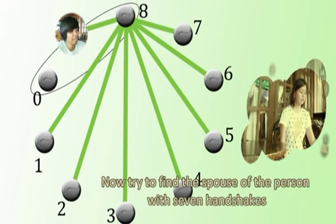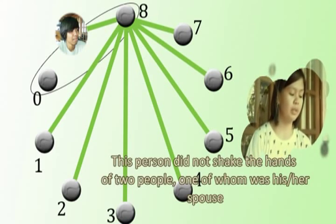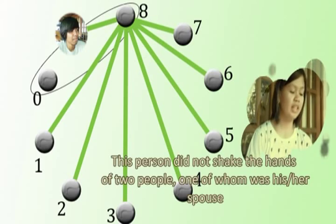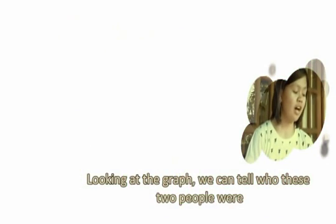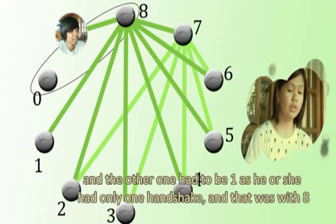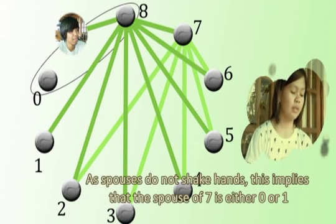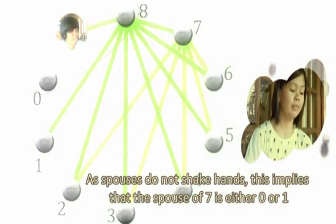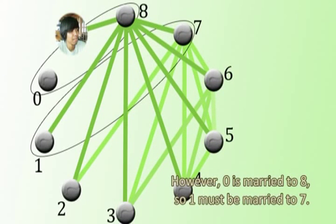We also encircle eight and zero together to express that they are married. Now, try to find the spouse of the person with seven handshakes. This person did not shake the hands of two people, one of whom was his or her spouse. Looking at the graph, we can tell who these two people were. One of them had to be zero, as he or she did not shake anyone's hand. And the other one had to be one, as he or she had only one handshake, and that was with eight. As spouses do not shake hands, this implies that the spouse of seven is either zero or one. However, zero is married to eight, so one must be married to seven.